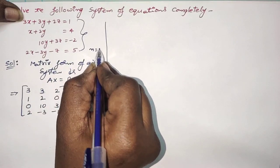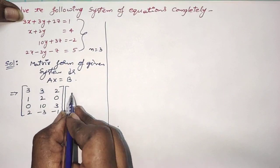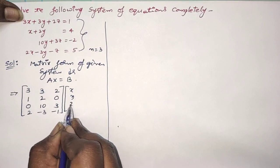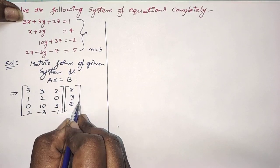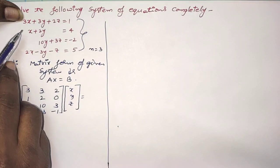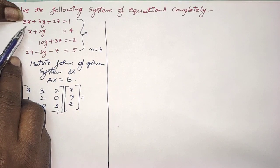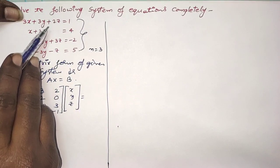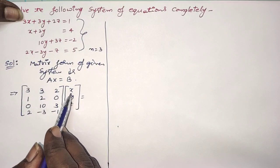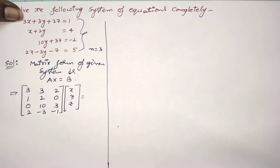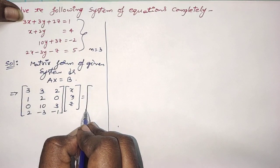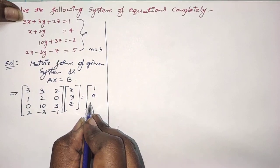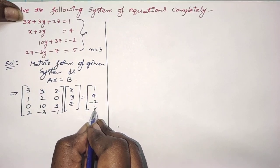That is why N value is 3. The variables are X, Y, Z. Sometimes variables in the equation are given as X1, X2, X3 instead of X, Y, Z — in that case, write X1, X2, X3 here. And the right-hand side constants are 1, 4, minus 2, 5. This is the given system.